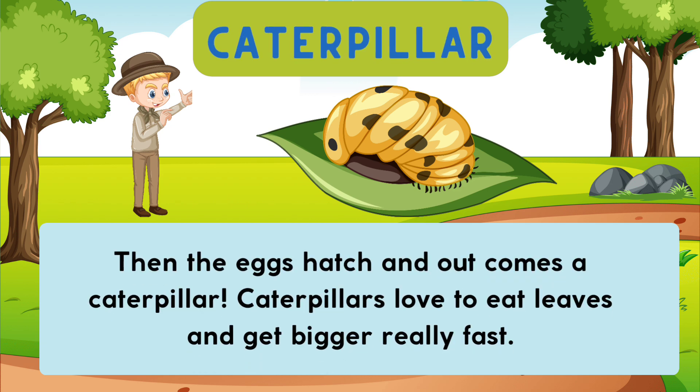Then the eggs hatch and out comes a caterpillar. Caterpillars love to eat leaves and get bigger really fast.